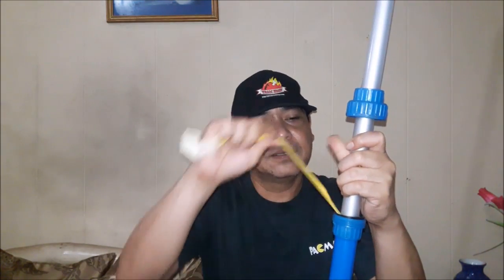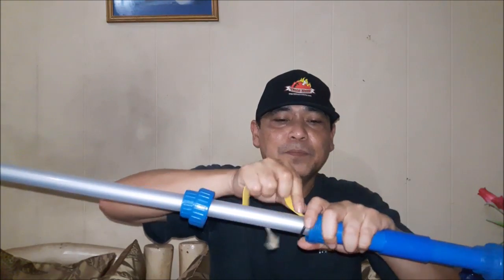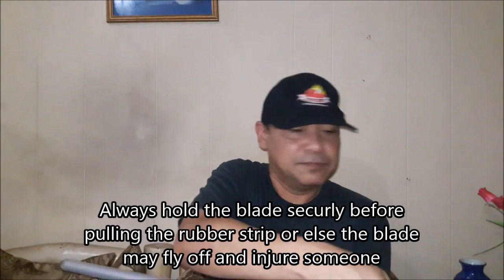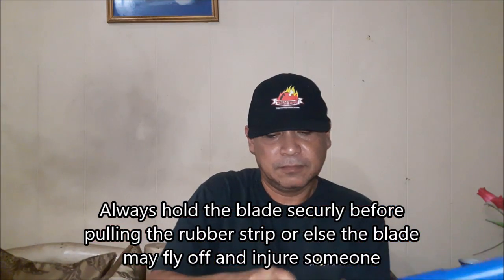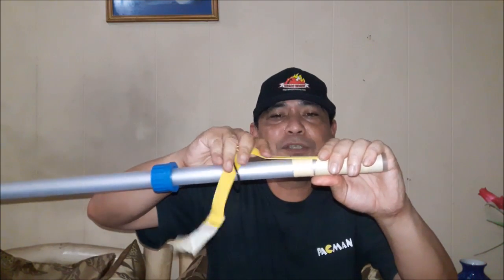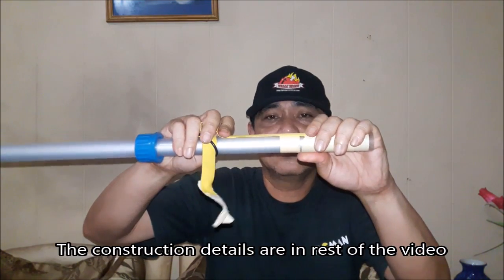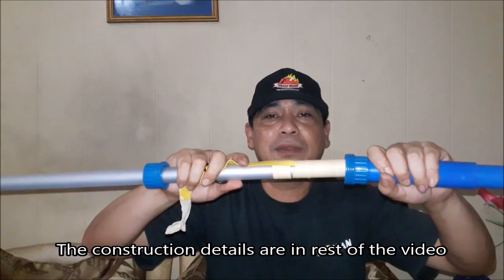Once you get the rubber strip out, you still can't pull the blade. So that's the second level of protection. But if you pull the rubber strip and stretch it, you can pull it out. Now that works because when you stretch the rubber strip, it sort of thins out. And when you let it go, it becomes thicker at this point. And that's what causes it to hold on to the pipe.